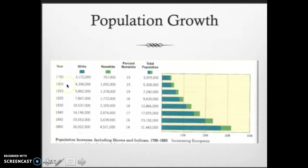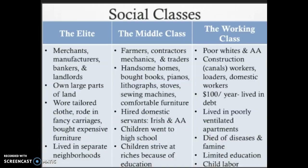From 1800 to the 1840s, the total population — including slaves — went from about five million to more than triple that. The effects of the Industrial Revolution increased urban populations; in some cities, population increased fourfold to over one million people — cities like New York, Boston, and Chicago. These cities were all connected via railroad, canals, and roads. Another major effect of the Industrial Revolution was the emergence of social classes: the elite, the middle class, and the working class.